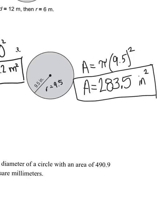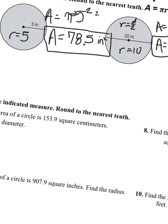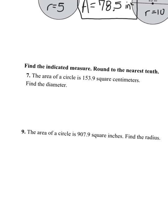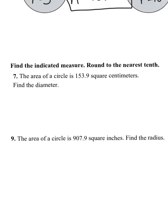Now we'll get into word problems that are doing the same exact thing, but they put it into words instead. We'll start with question number 7. The area of a circle is 153.9 square centimeters. Find the diameter.